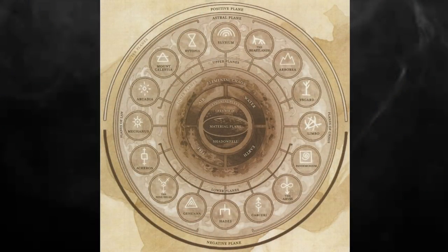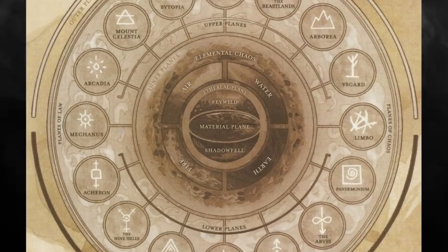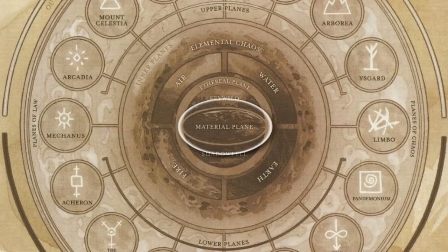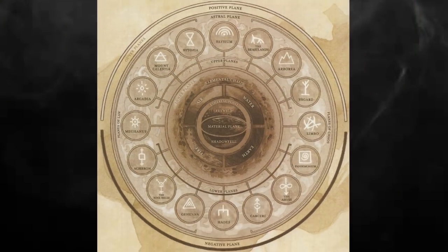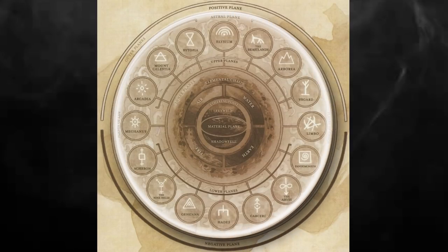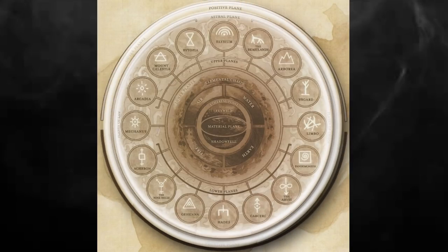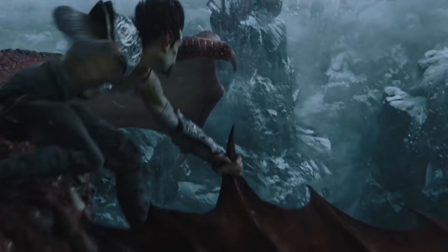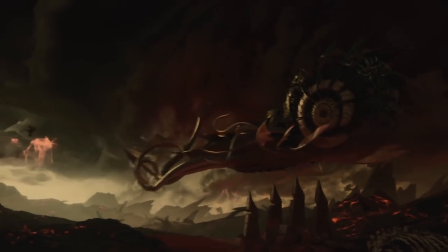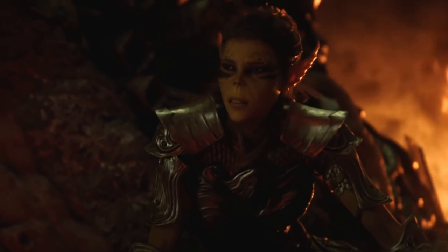The Great Wheel: at the center of the wheel you can see the material plane, which is where the planets are — the world of Toril and of course the city of Baldur's Gate. The inner planes form a wheel around the material plane, enveloped by the ethereal plane. Then the outer planes form another wheel around and behind that one, arranged according to alignment, with the Outlands linking them all. For Baldur's Gate 3, we've already seen the material plane, cinematic footage of the Shadowfell, and the Nine Hells, which are part of the lower planes.